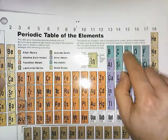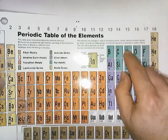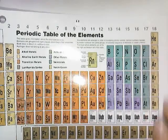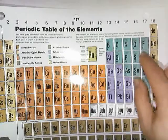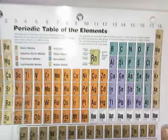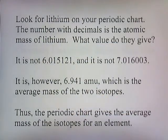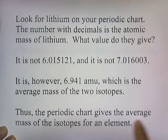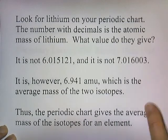For nitrogen, it says 14.007. That's the average mass of the different types of nitrogen atoms. For oxygen, 15.999. That's the average mass of the different isotopes of oxygen. So that means the periodic chart gives the average mass of the isotopes for an element.